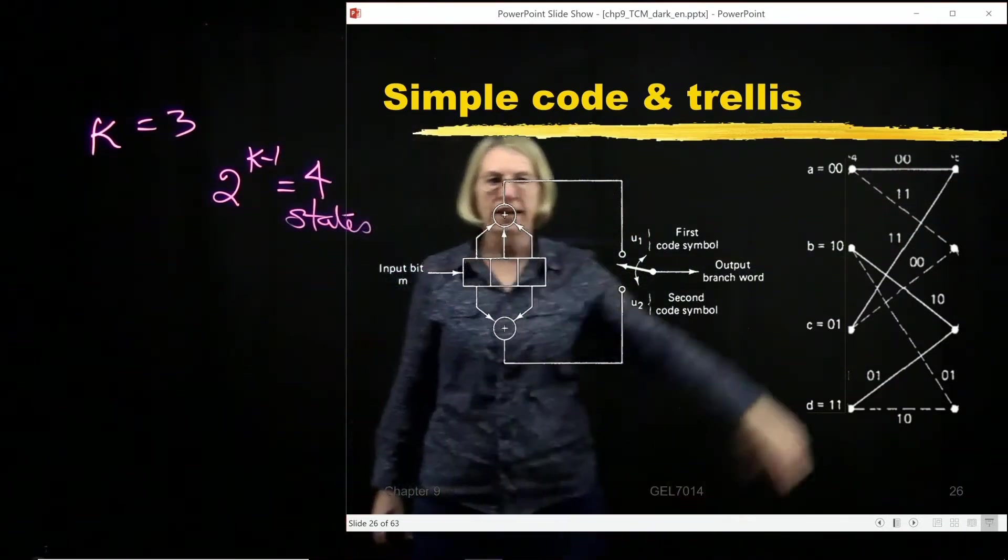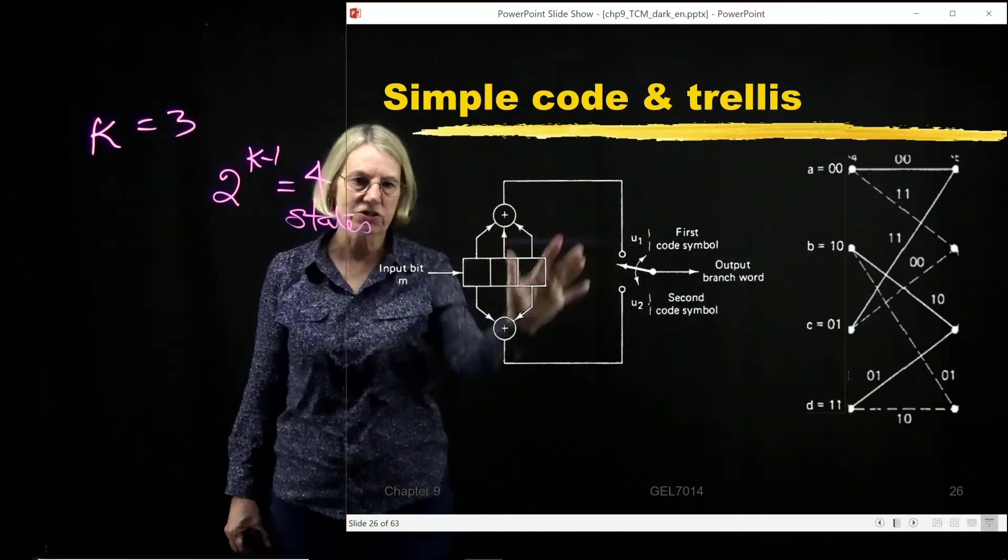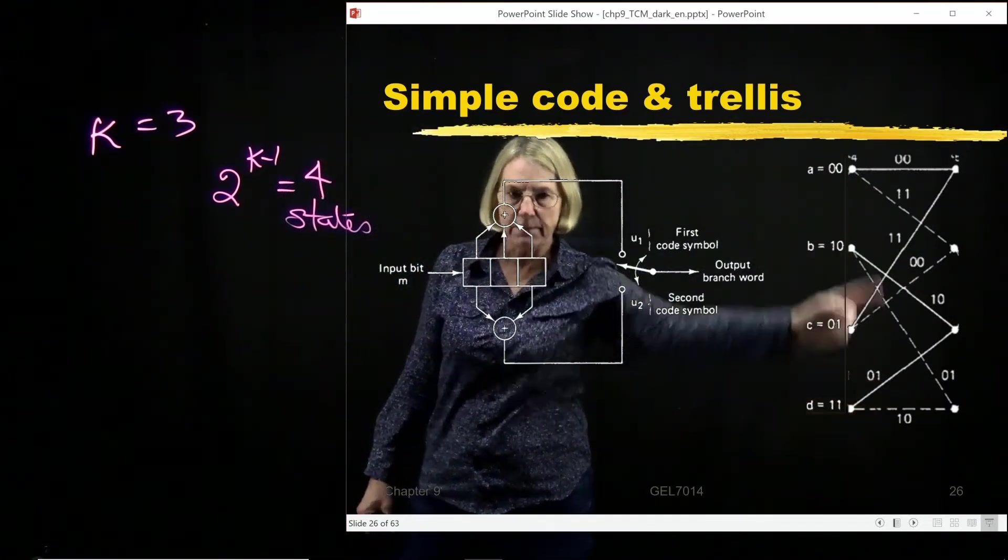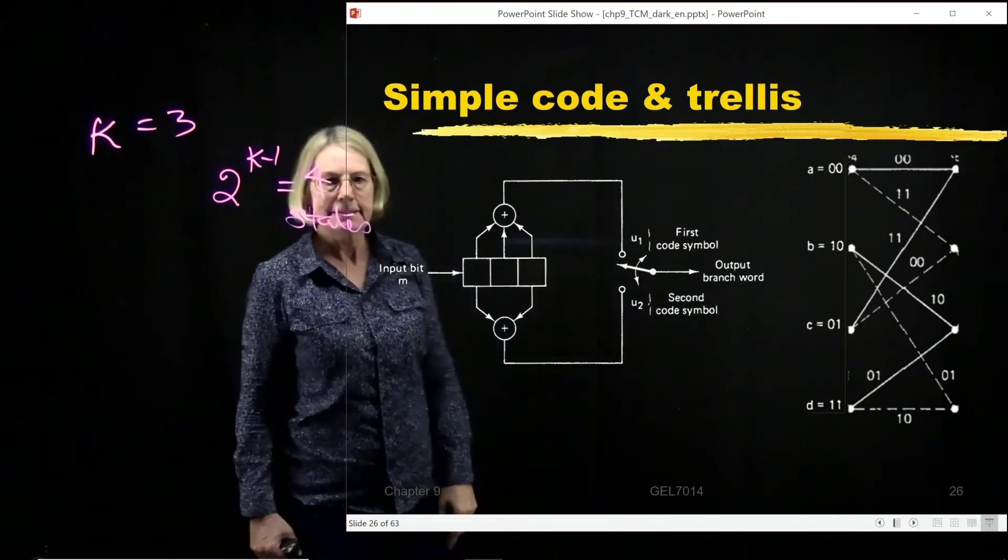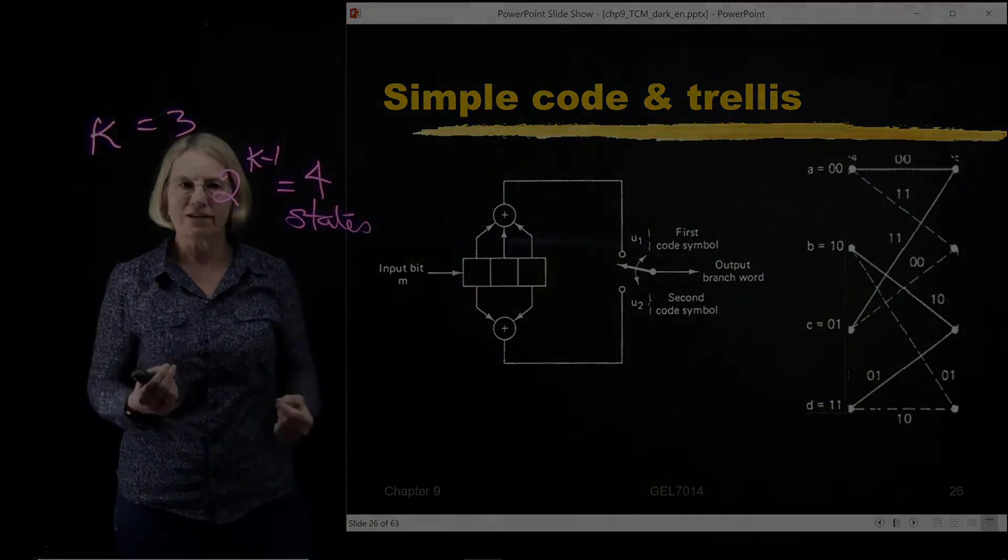We've done this already. This is how you build the trellis based on this implementation, the shift register implementation. So I have this, and it's written the bit sequences, which are here. So what changes with trellis-coded modulation?